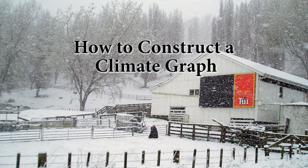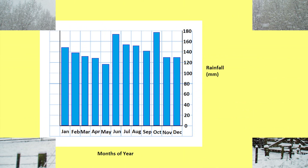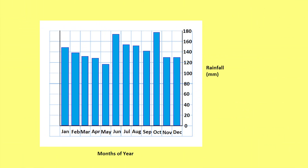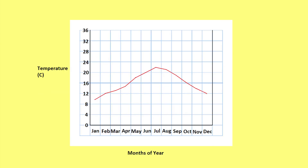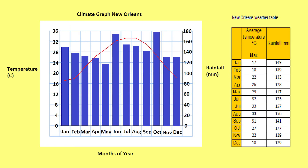Climate graphs are useful for identifying climate patterns in a location. They consist of a blue bar graph representing rainfall for each month of the year and a red line graph representing the temperature. By examining a climate graph you can identify the temperature range, the seasonal distribution of rainfall, and how much rainfall falls in a place.